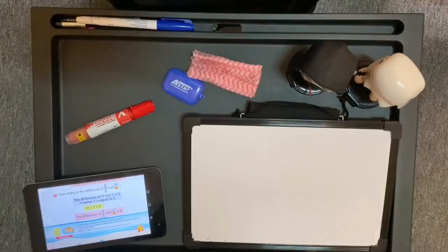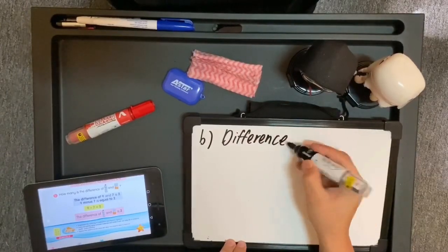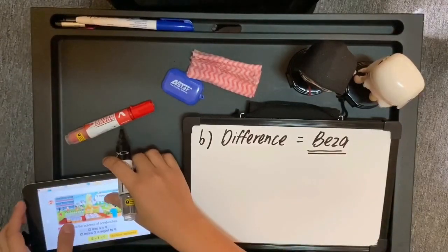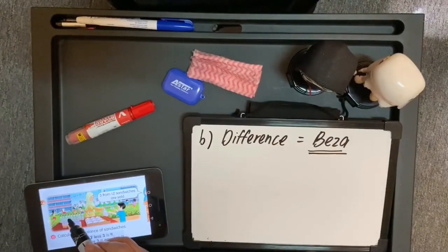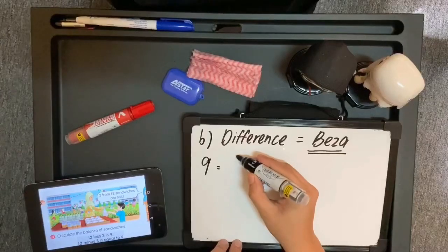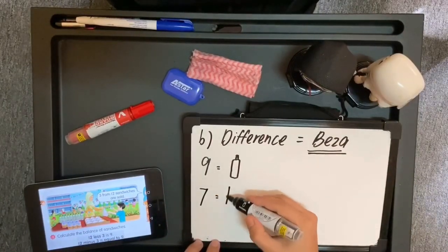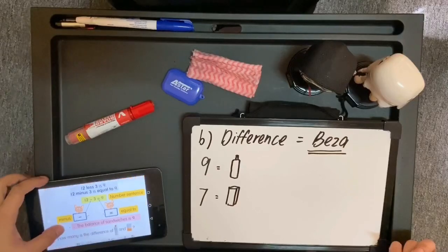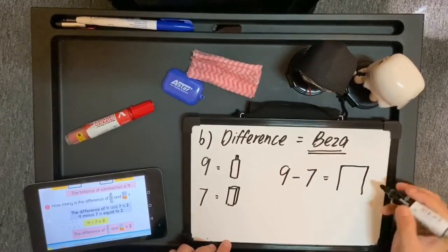Masih lagi soalan muka surat 75, contoh yang kedua iaitu B. Masih lagi soalan tolak. How many is the difference of mineral water and soybean drink? Ini soalan different, iaitu beza. Operasi tolak. Boleh rujuk kepada gambar. Ada mineral water — 9 mineral water — dan soybean ada 7. Jadi untuk buat ayat matematik, kita perlu tengok nombor mana yang lagi banyak, yang lagi besar. Jadi 9 akan tolak dengan 7. Kita akan cari beza di antara mineral water dan juga soybean.